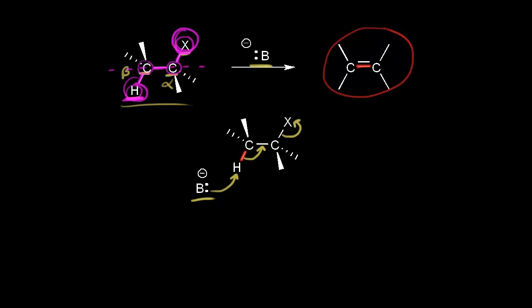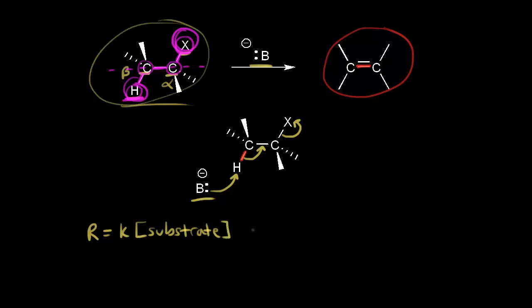When you look at the kinetics for an E2 mechanism, the overall rate of the reaction is equal to the rate constant times the concentration of the substrate to the first power — and the substrate is your alkyl halide — times the concentration of the base to the first power, so our strong base. This is an elimination reaction that depends on the concentration of both the substrate and the base, and that's why we call this an E2 reaction.